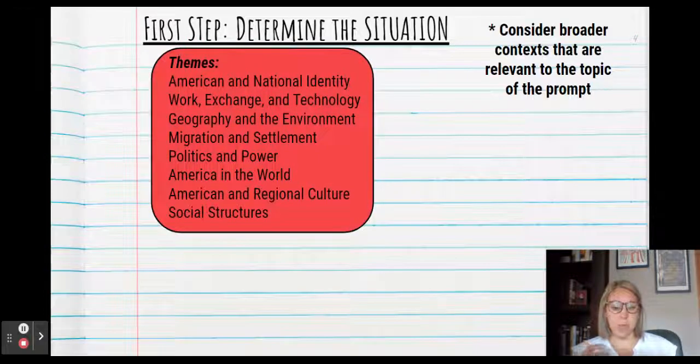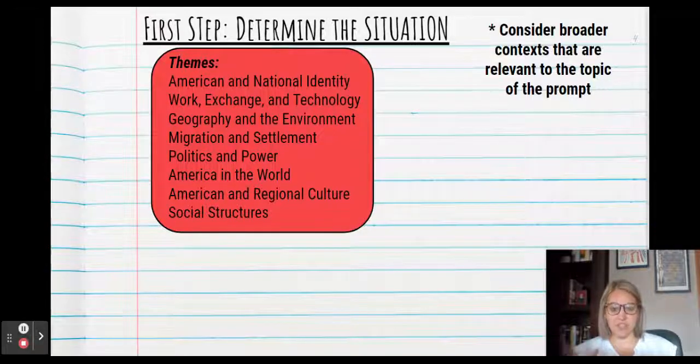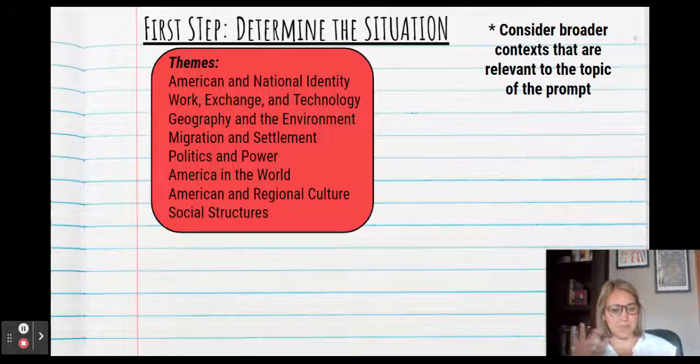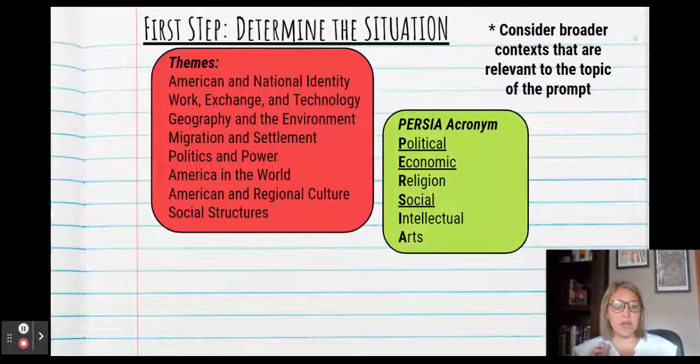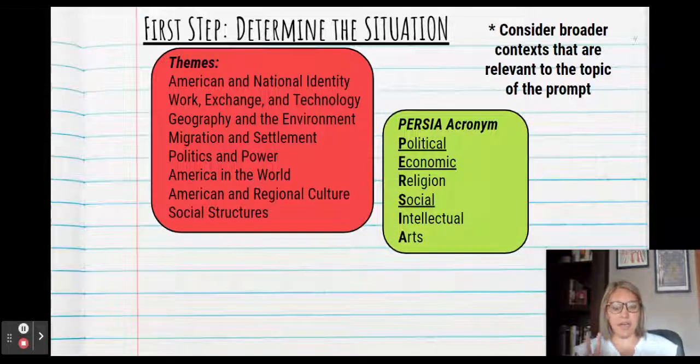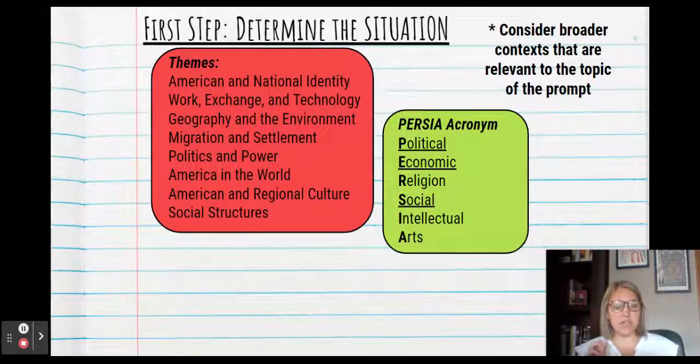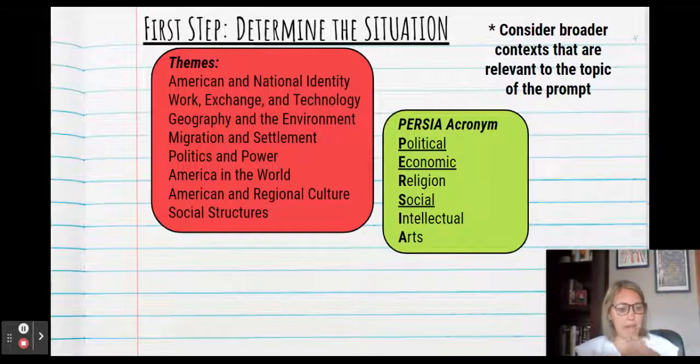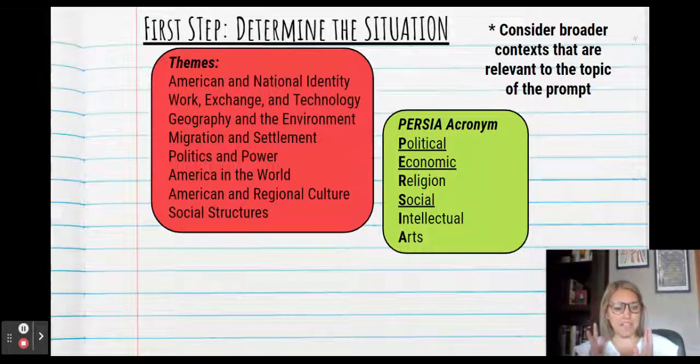So think about some of the ways that you can think about what are the broader contexts. Sometimes it's helpful to remember the themes that are mentioned. These are the themes of AP US history. So sometimes migration and settlement, or work exchange and technology, those can be themes that draw some ideas into your mind about broader contexts. Other times, students really latch on to the PERSIA acronym. So the political, economic, religious, social, intellectual, and artistic trends that are happening in the period. And I would encourage you to really focus on the political, economic, and social. So think about what trends are happening during this time, and that might help you consider a broader context.